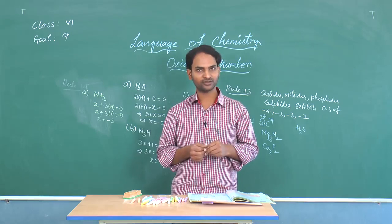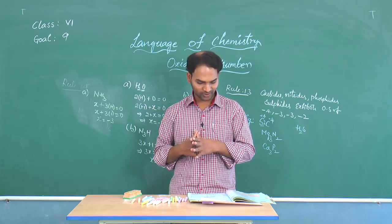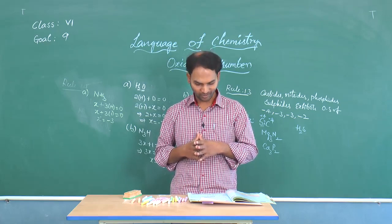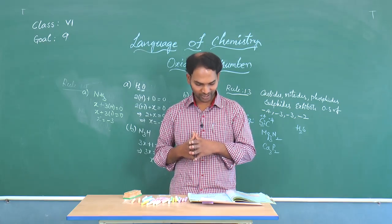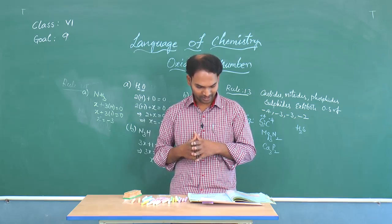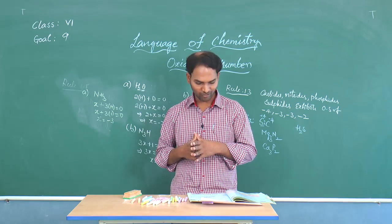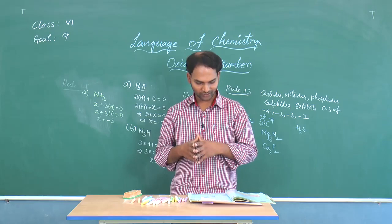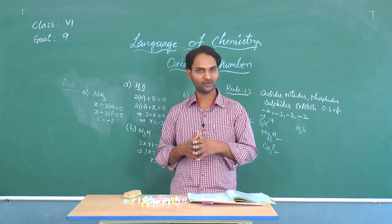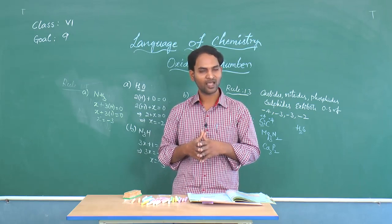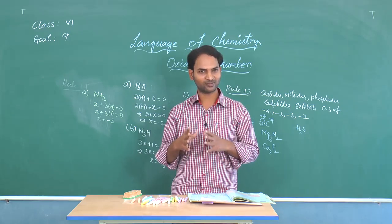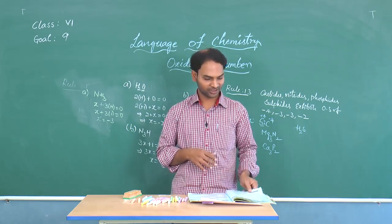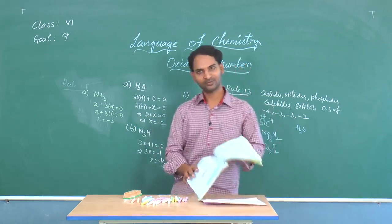For the statement-type question: statement A says in all compounds the oxidation number of oxygen is minus 2 — correct. Statement B says in all compounds the oxidation number of fluorine is minus 1 — correct. Statement C says carbon exhibits only +4 and minus 4 oxidation numbers — this is incorrect, as carbon also exhibits 0 oxidation state. Statements A and B are correct, so the answer is option C. This concludes goal 9. We will meet in the next goal. Thank you.